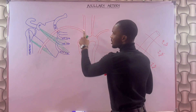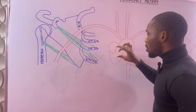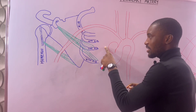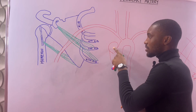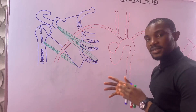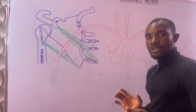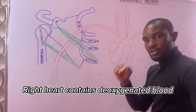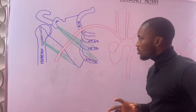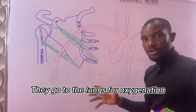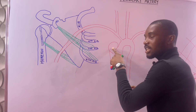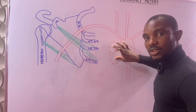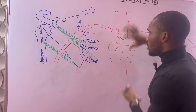Let me draw the circulation from the heart to form the axillary artery. This is the heart — for simplicity I've removed the right heart and left just the left side. Veins from the rest of the body drain into the right heart, which moves blood through the right atrium and ventricle into the lungs for oxygenation. From the lungs it moves to the left side of the heart, which contains oxygenated blood, and from there it goes to the rest of the body.